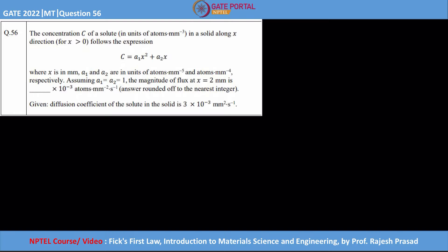a₁ and a₂ is equal to 1. The magnitude of flux at x = 2 mm is how much? It is given that the diffusion coefficient is 3 × 10⁻³ mm² per second.